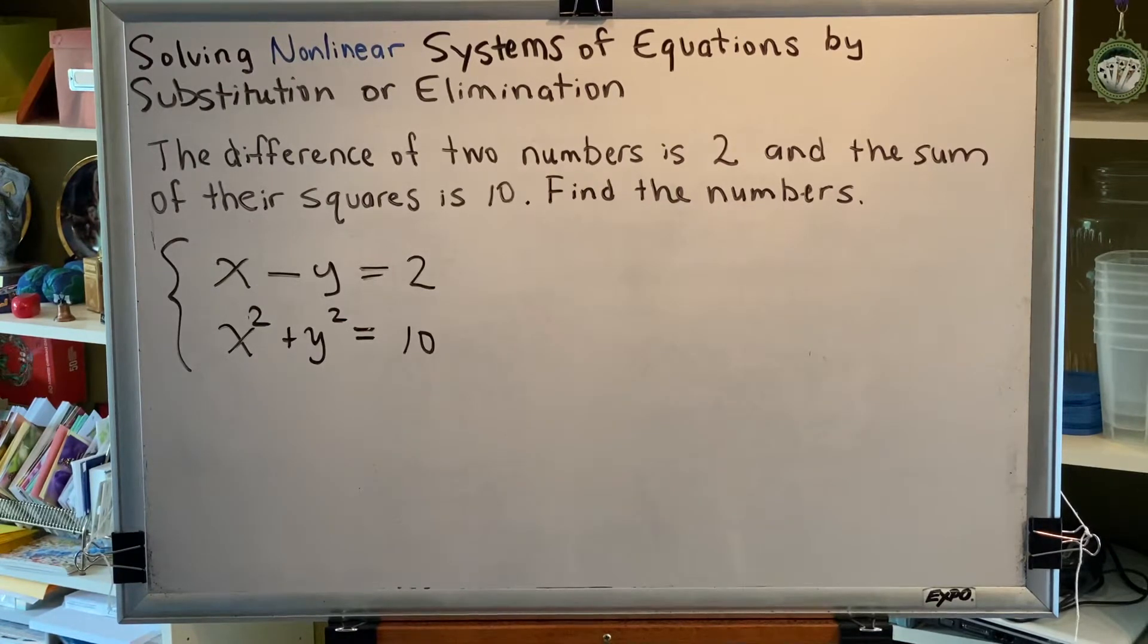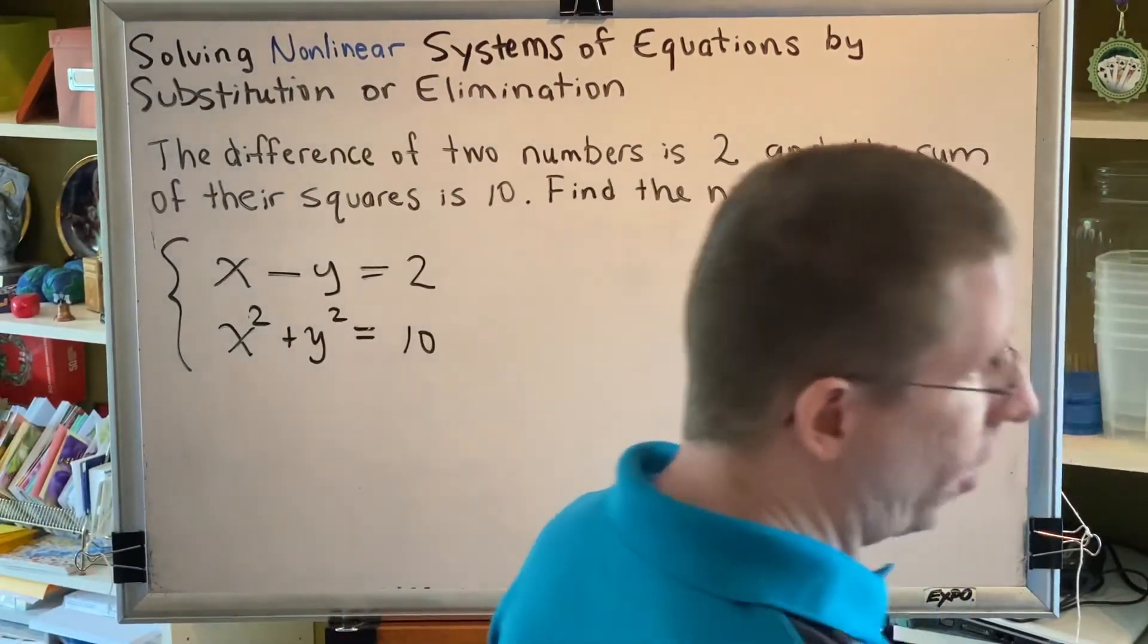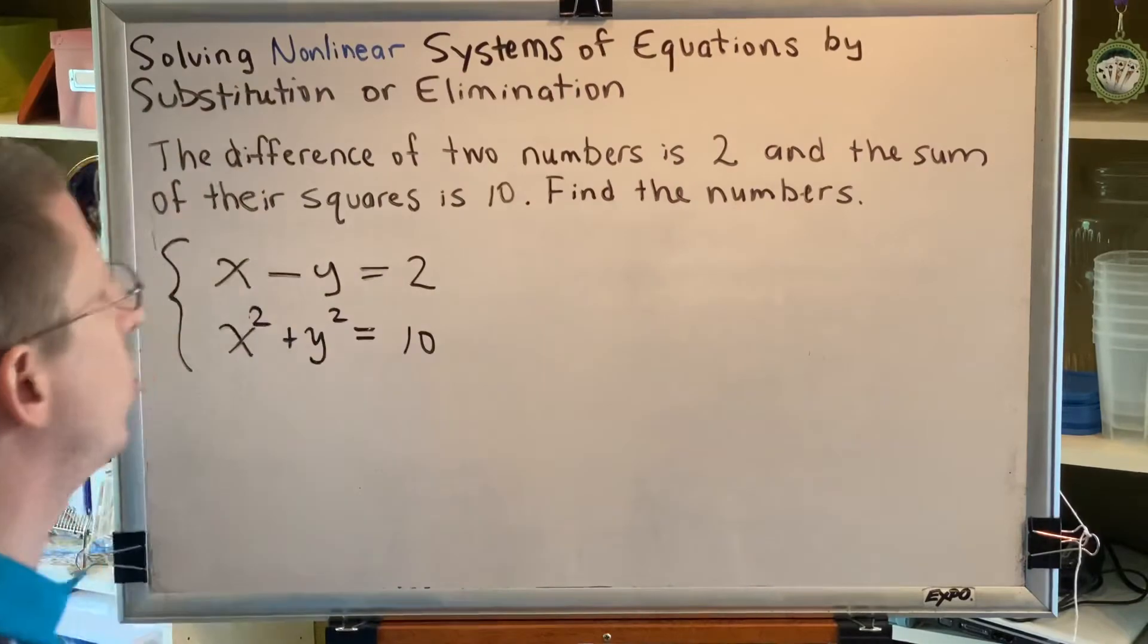Step one, clear fractions. We don't have any. Step two, look for any x or y terms with a coefficient of 1 or negative 1. If we can find any, then we will use substitution. If not, we would move on to step three, which is to use elimination.